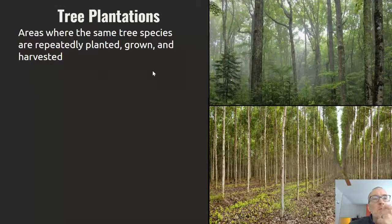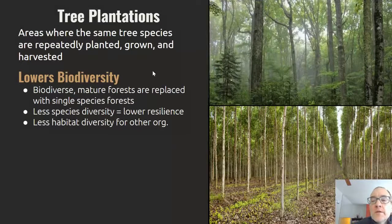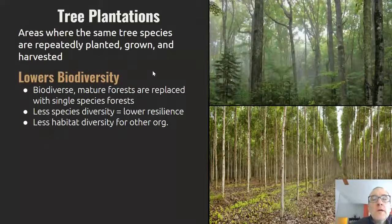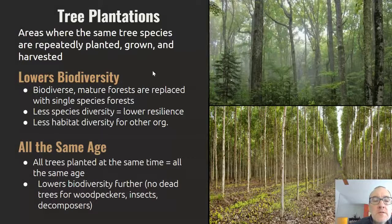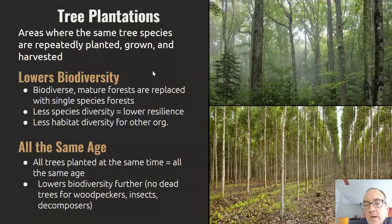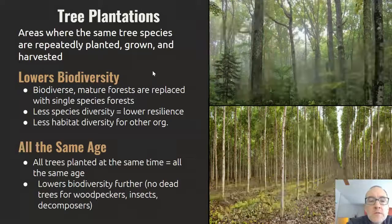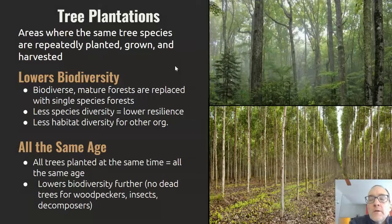Tree plantations are usually what happens after clear cutting — you plant one species, maybe two, in that area. As a consequence you're going to have much lower biodiversity, and less species diversity means less resilience for that ecosystem. There's obviously going to be less habitat and fewer niches for species to exist. All those plants are going to be the same age, which homogenizes the structure of the forest — it won't have different-sized trees utilized differently by various species. Think of things like woodpeckers, which really like dead old standing trees, and without those they can't exist.